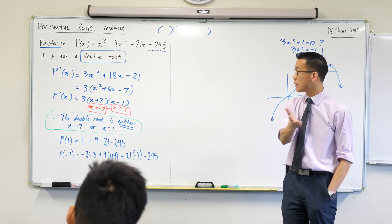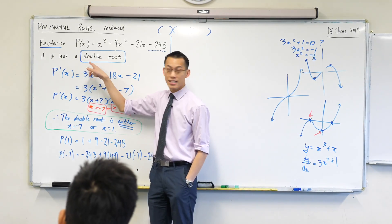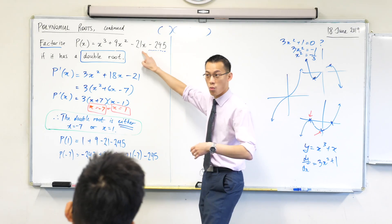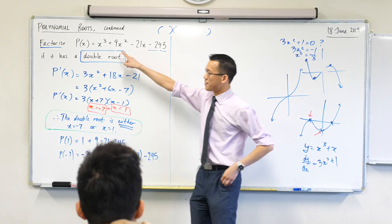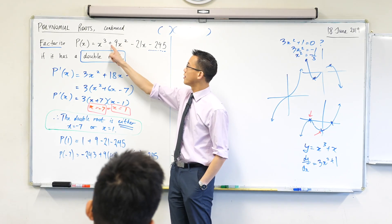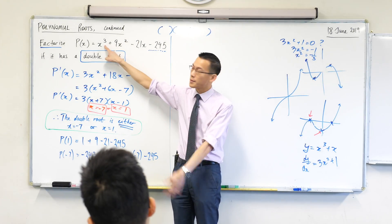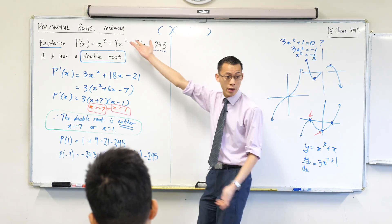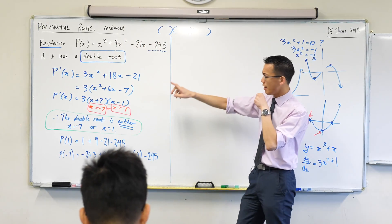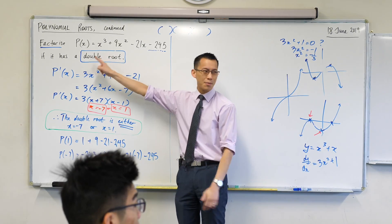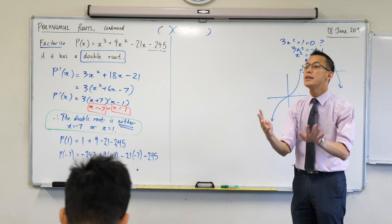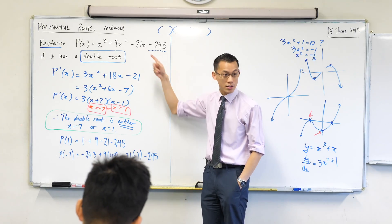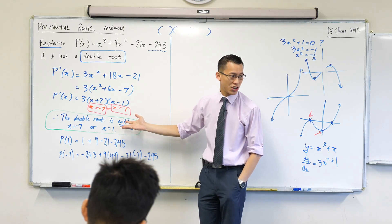The degree of this polynomial is 3, which tells you the maximum number of roots is 3. If there were two double roots, you'd need a degree of at least 4. Since the degree is 3 and there's one double root, the only other root must be a single root. So one stationary point corresponds to the double root, and the other is just a regular stationary point. There can only be one double root in this cubic.